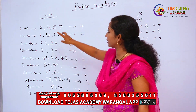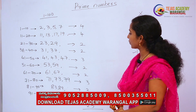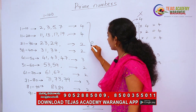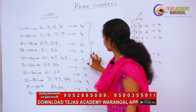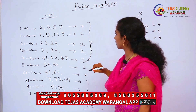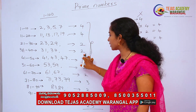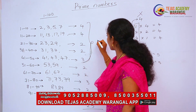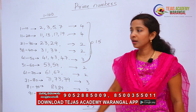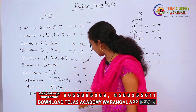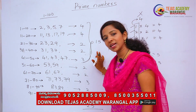How many prime numbers are there between 1 and 100? Twenty-five. How many prime numbers are there between 1 and 50? Count 4 plus 4 is 8, plus 2 is 10, plus 2 is 12, plus 3 is 15. So there are 15 prime numbers between 1 and 50. Between 1 and 100, there are 25 prime numbers.